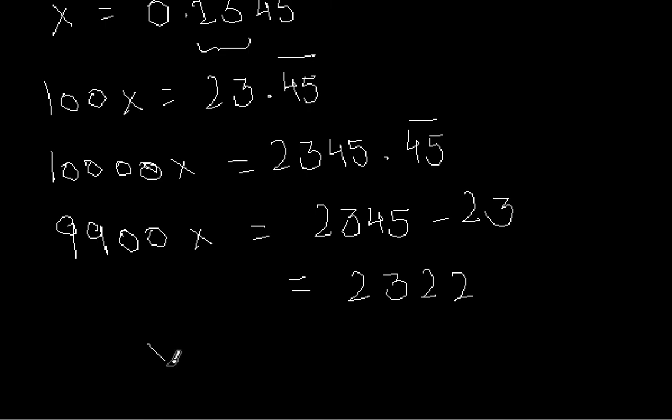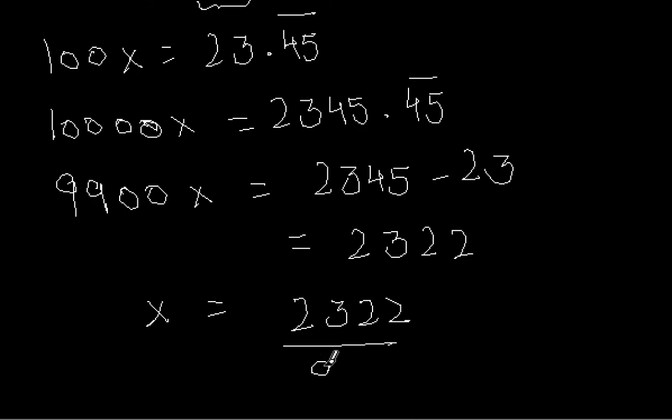Therefore, x is 2322 upon 9900. Note that this can be further simplified, but we don't have to do it here because we have already got the answer in p upon q form, which was the required form of the given recurring decimal. This is how we convert these kinds of forms.